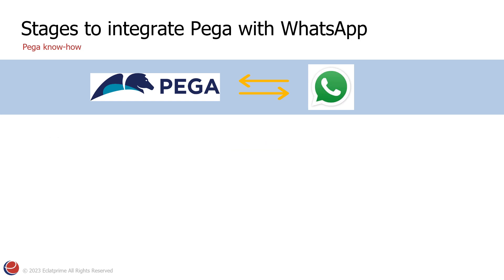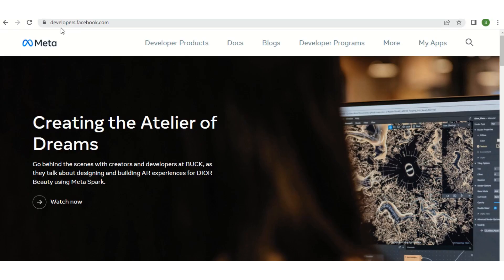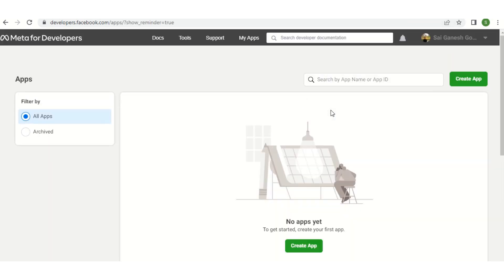For the first stage, register as a meta developer. You need to have a Facebook account, and after you have your Facebook ID and password, log in to developers.facebook.com. Here in the browser I have provided developers.facebook.com. We do have the 'My Apps' tab over here, so click on that. You will get this screen — Meta for Developers and Apps.